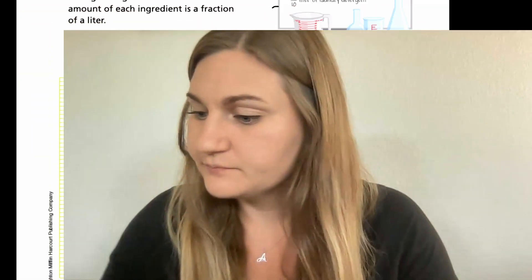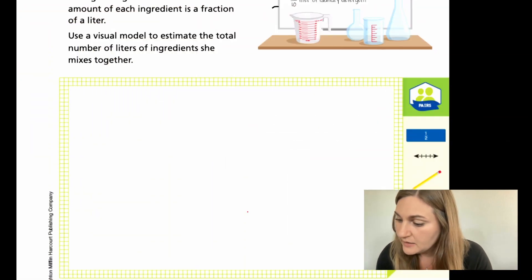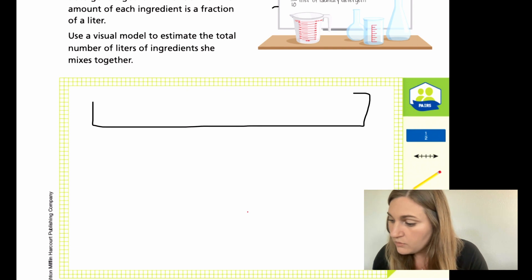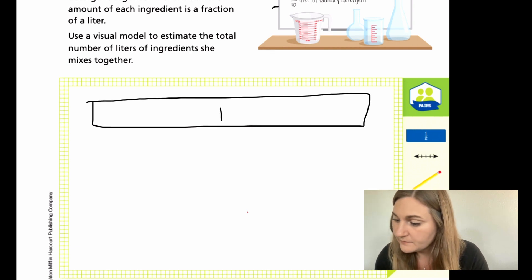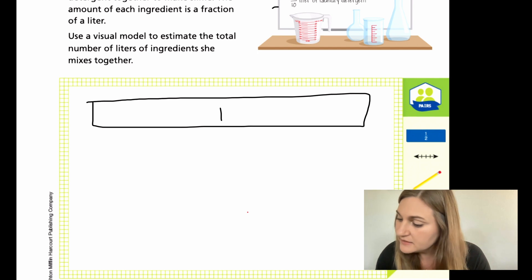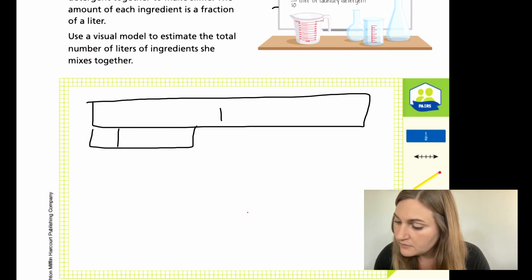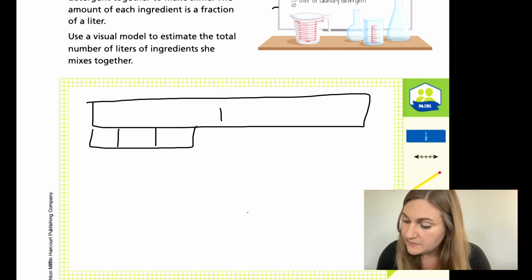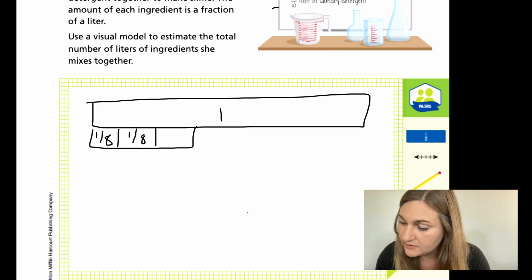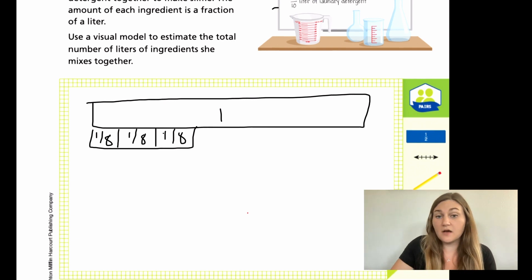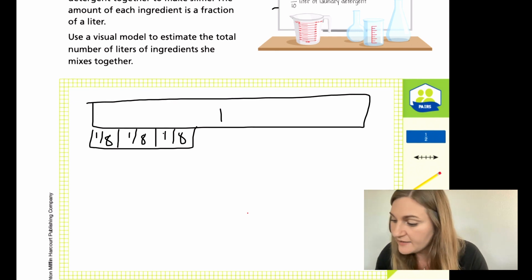You can go ahead and draw that pretty easily. If I give my whole 1, I know that my 3/8 is a little bit less than 1/2. So I'm going to do my 1/8 here, my 1/8 here, and my 1/8 here. I also know that 2/5 is also just a little bit less than 1/2.